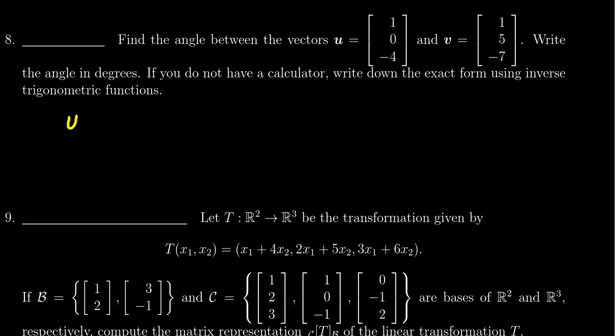If we take the dot product of the two vectors, u and v, we divide that by the length of u times the length of v. This is going to equal cosine of the angle between them. So that's what we're looking for. We need to compute the dot product of u and v. So if we take the dot product of u and v, we're going to get 1 plus 0 plus 28.